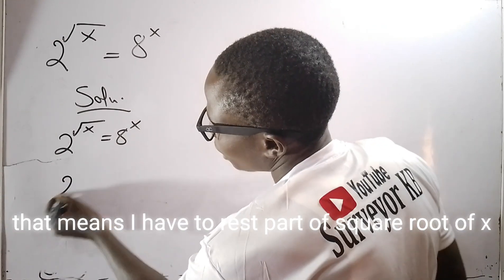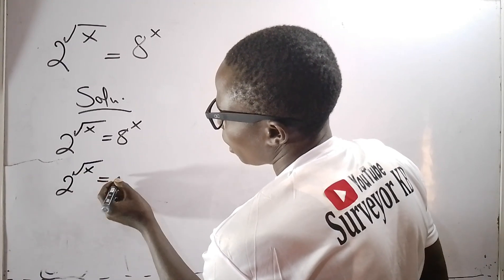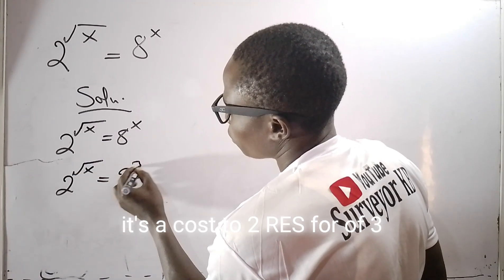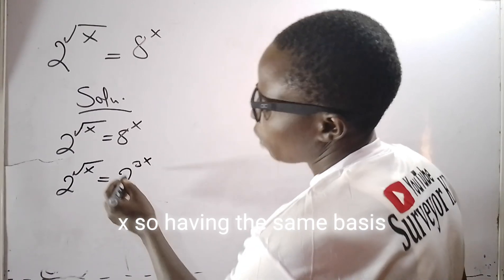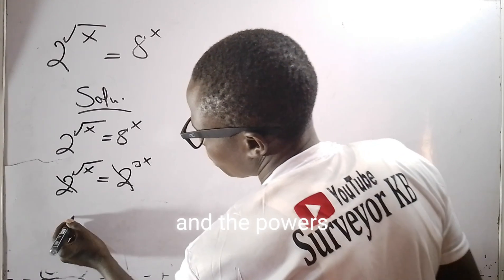So having the same basis, I can equate the two and make use of the powers. The powers, square root of x is now equals to 3x.